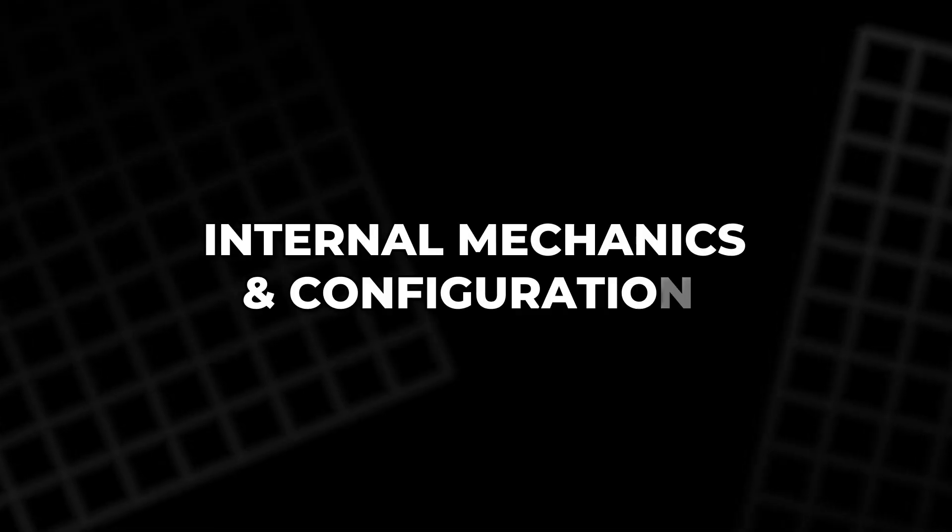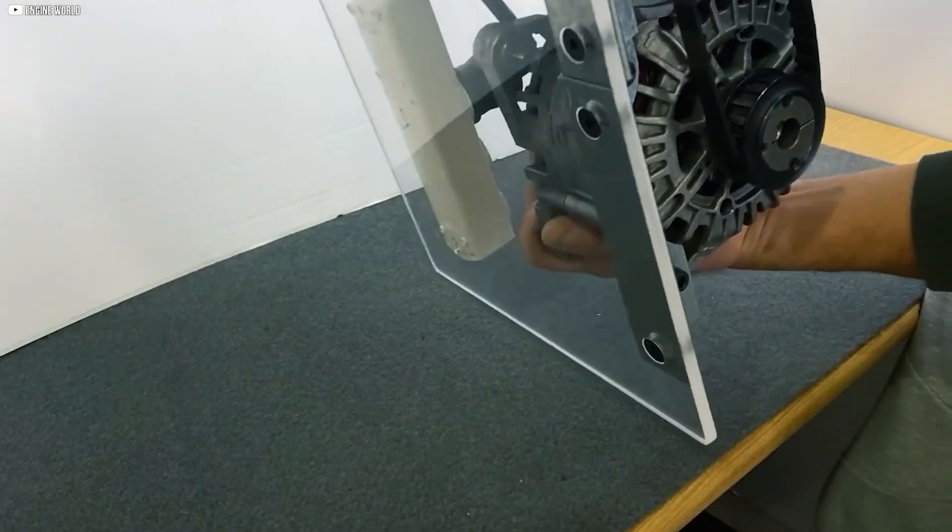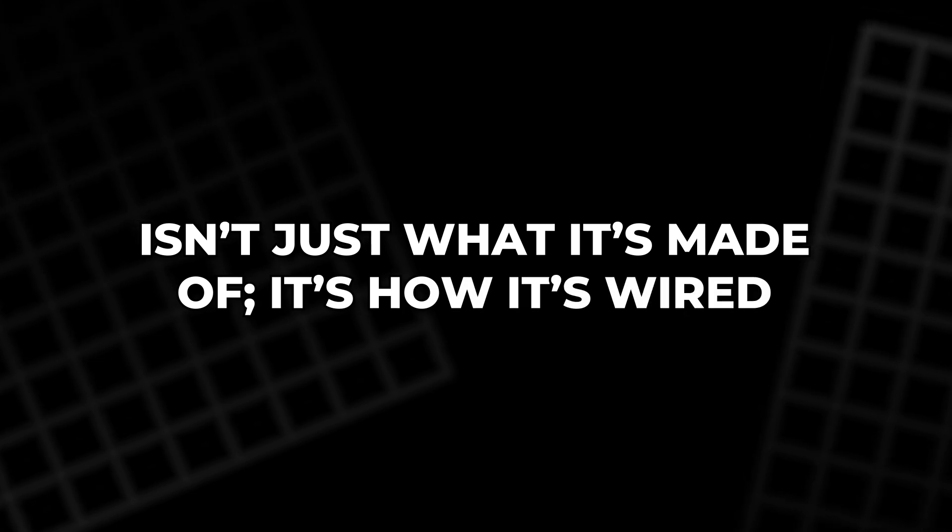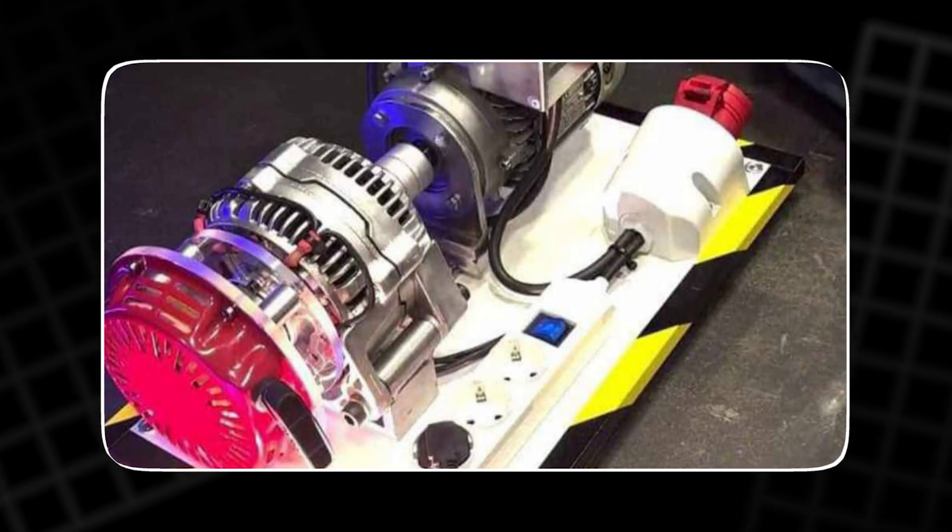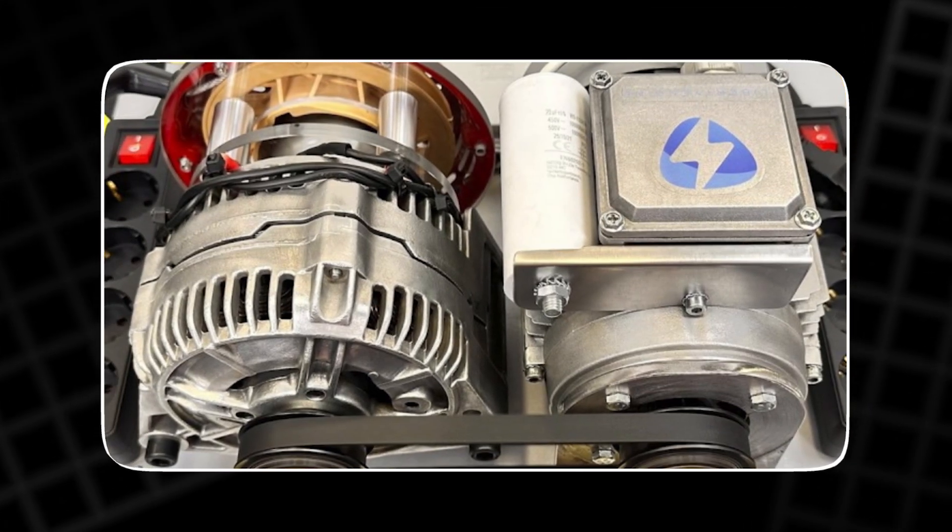Internal mechanics and configuration. What makes the Liberty engine 1.1 stand out isn't just what it's made of. It's how it's wired. At its core, this generator uses a triphasic configuration, arranged in a delta or triangle connection.